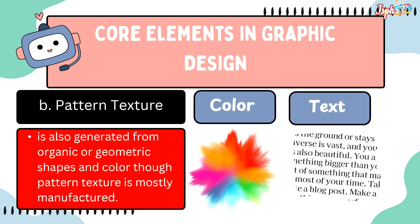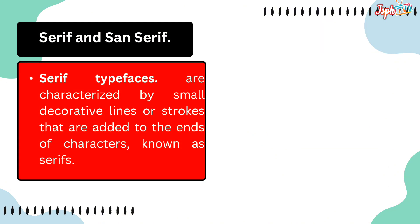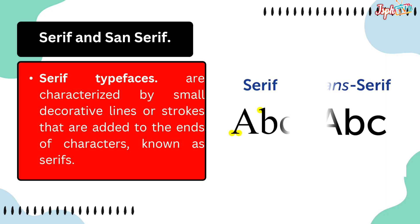Colors and text. Serif and sans-serif are characterized by small decorative lines or strokes that are added to the ends of characters, known as serifs.